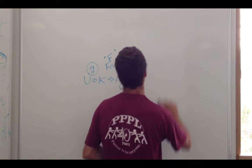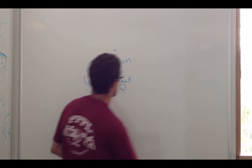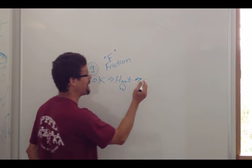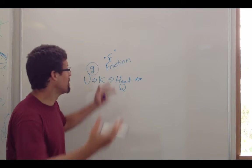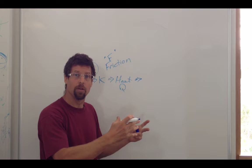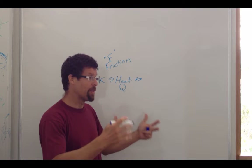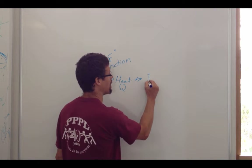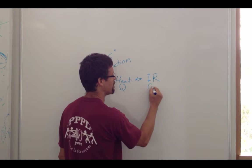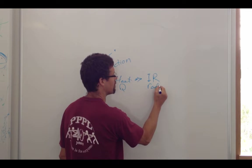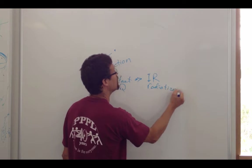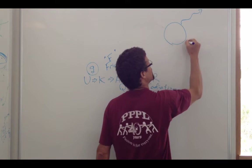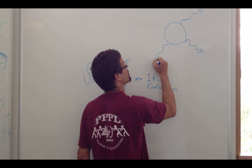Where does that heat go? That heat has to dissipate out into space ultimately. These processes that heat the Earth allow the Earth to cool by radiating this heat out into space as infrared radiation. We can draw the Earth radiating this heat out into space.